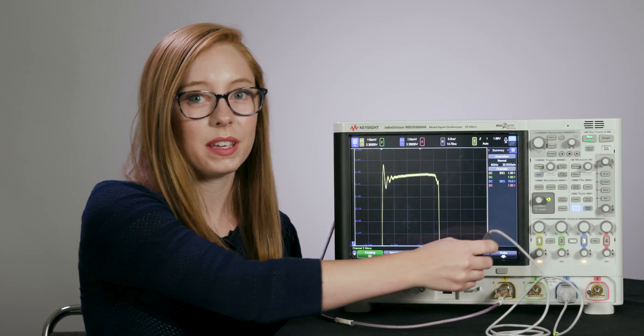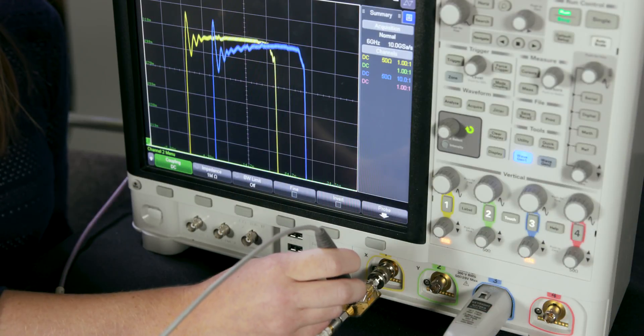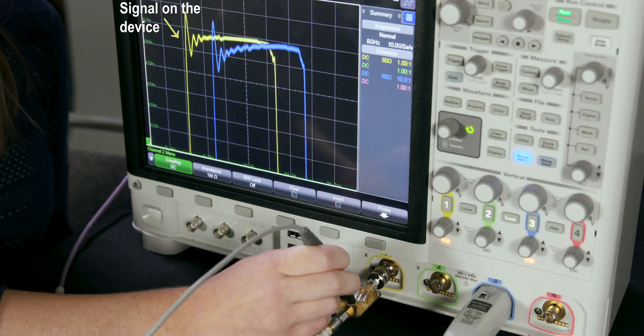When I probe the signal with my active probe, we can see two things. First, we see that the yellow trace hasn't really changed when I probe the signal, which means that the probe loading effect is negligible.